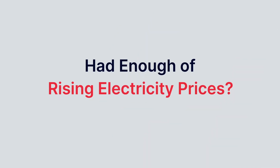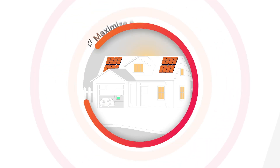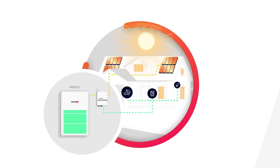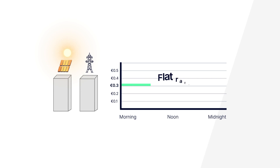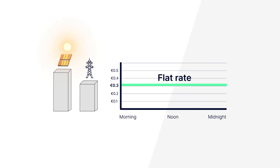Had enough of rising electricity prices? With maximized self-consumption mode, you can use as much free solar as possible to power your household and charge your battery, regardless of utility rates. For a flat utility rate plan, it's the most effective way to reduce grid use and gain energy independence.